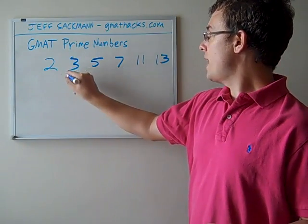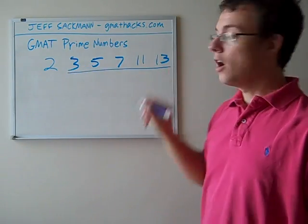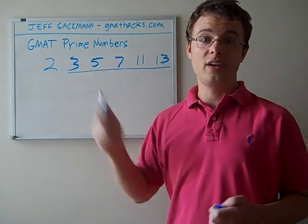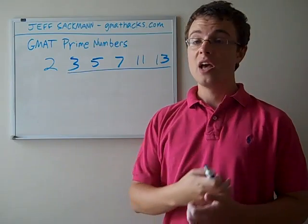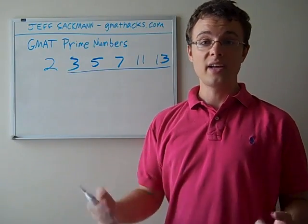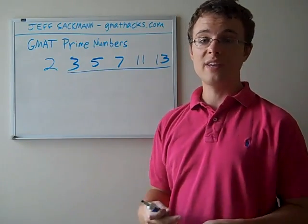So, notice one pattern of all the primes after 2. These are all odd numbers. 3, 5, 7, 11, 13. If you look at some bigger primes, they're all going to be odd. 19, 29, 37, and so on.